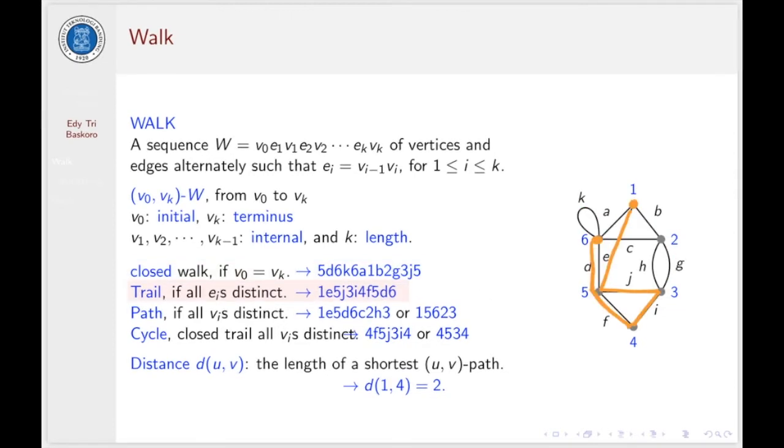W is called a trail if all edges are distinct. This is one of the examples, we have a trail from 1 to 6. We go through this edge, and then we go to this vertex, to 3, and then to 4, 5, and then to 6. All edges in this walk are distinct, so we have a trail here.